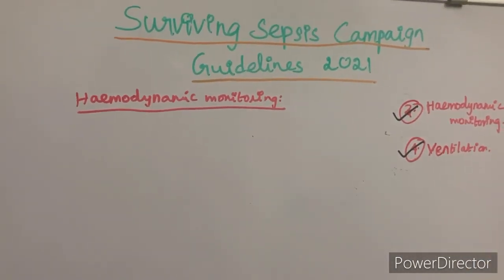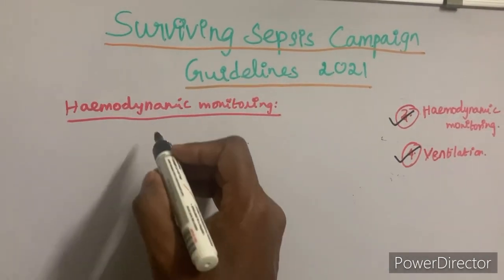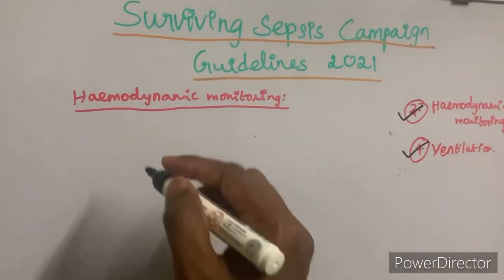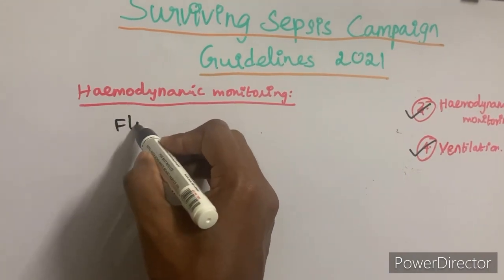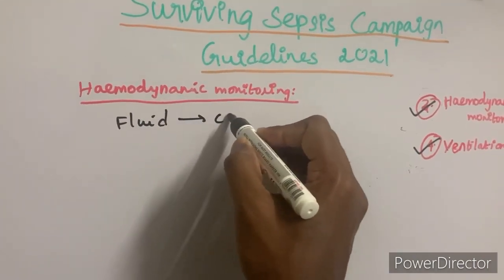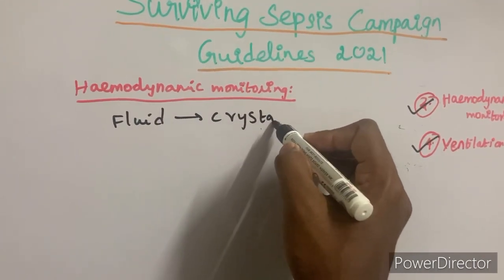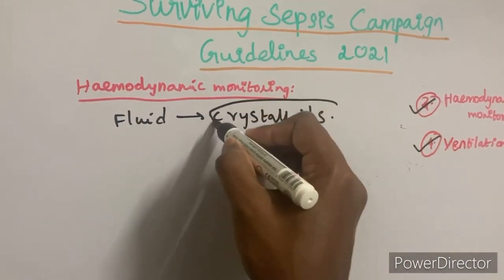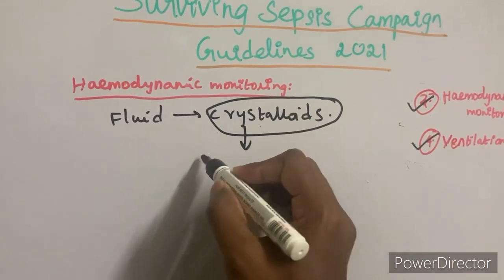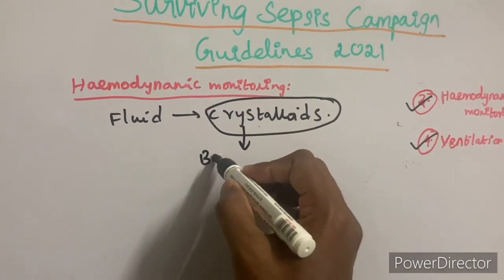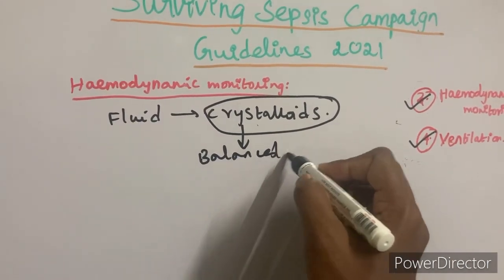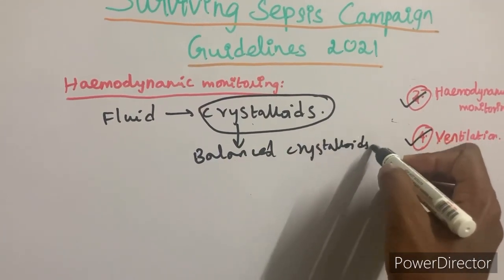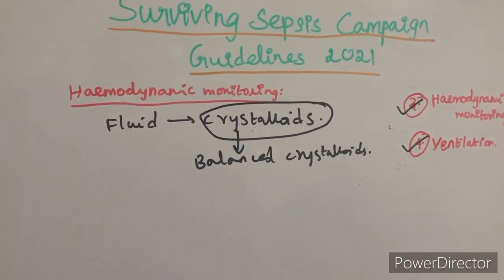For hemodynamic monitoring, the fluid of choice for initial resuscitation is crystalloids. Crystalloids should be considered as the first-line fluid, and among crystalloids, balanced crystalloid solutions are preferred over normal saline.